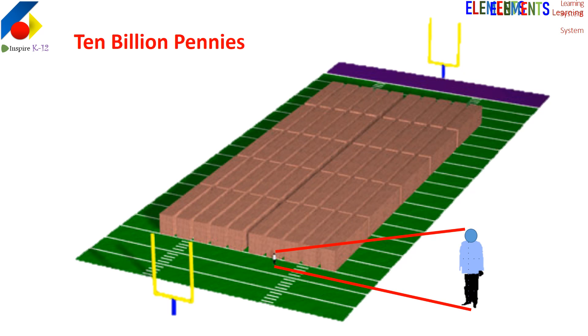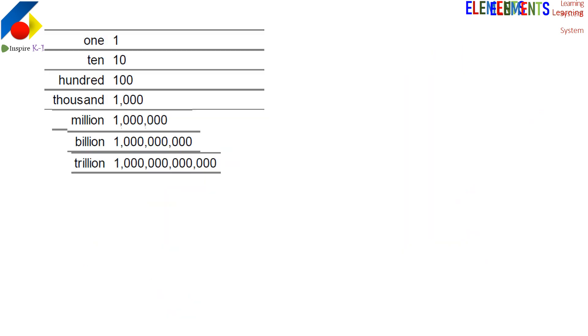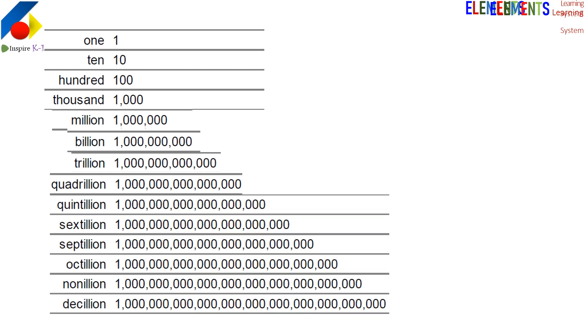We can write these numbers, but it's difficult to visualize in our head how big in terms of quantity we're really talking about. Ten billion is a very big number. A thousand billion is one trillion, then quadrillion. In the same flow, we can expose children to these numbers.